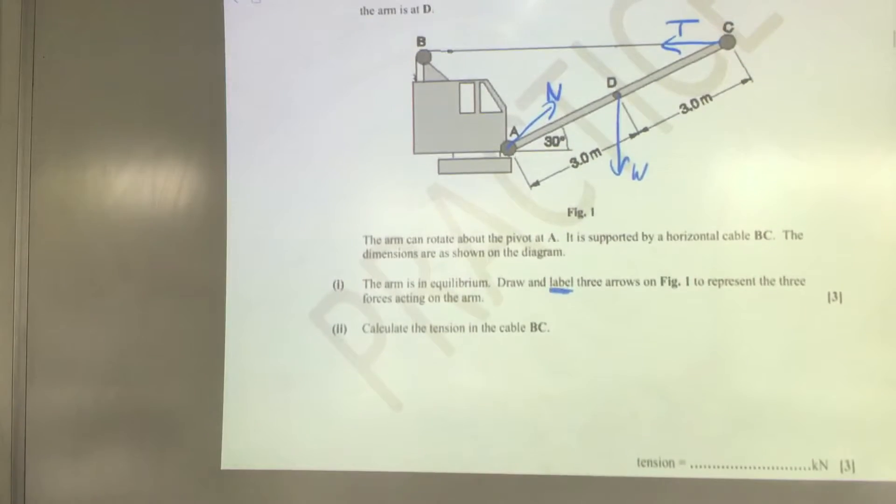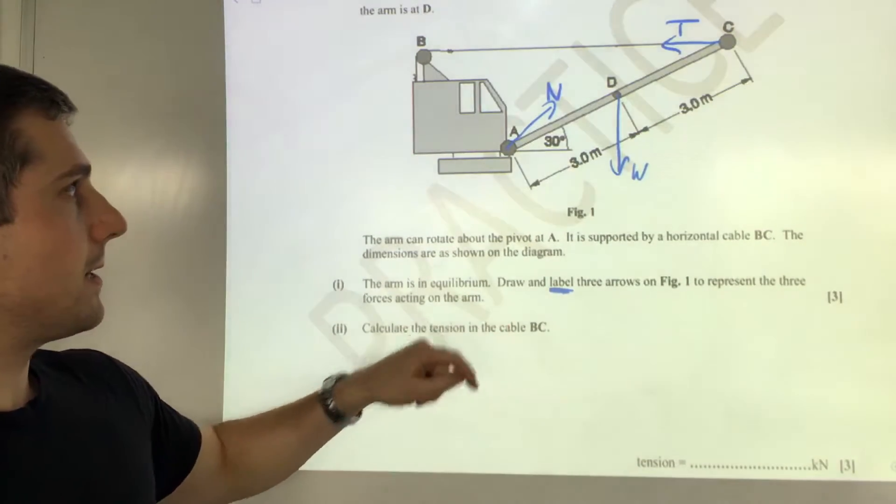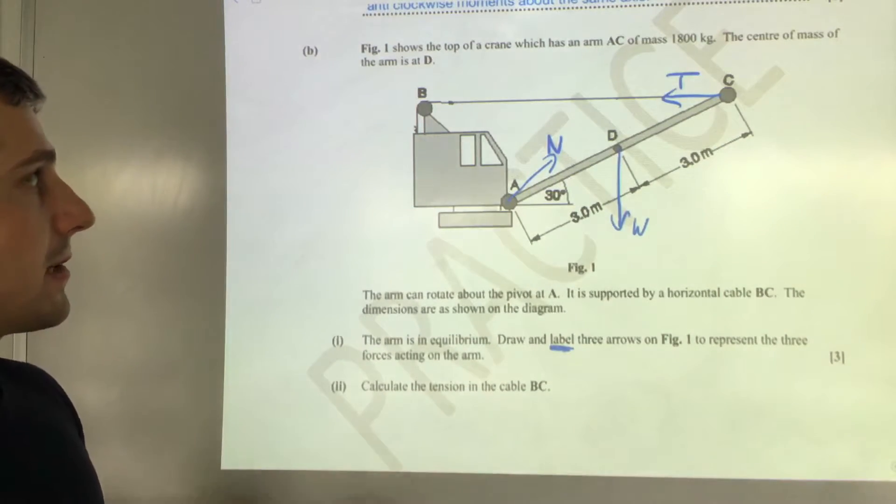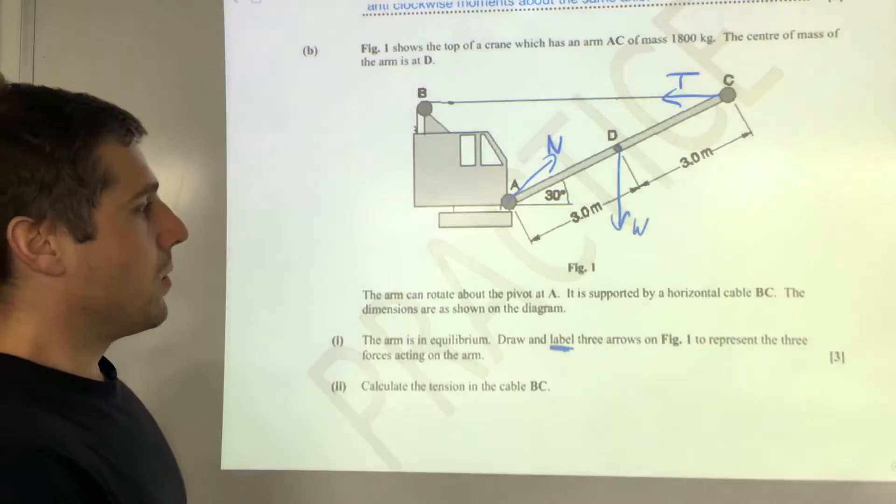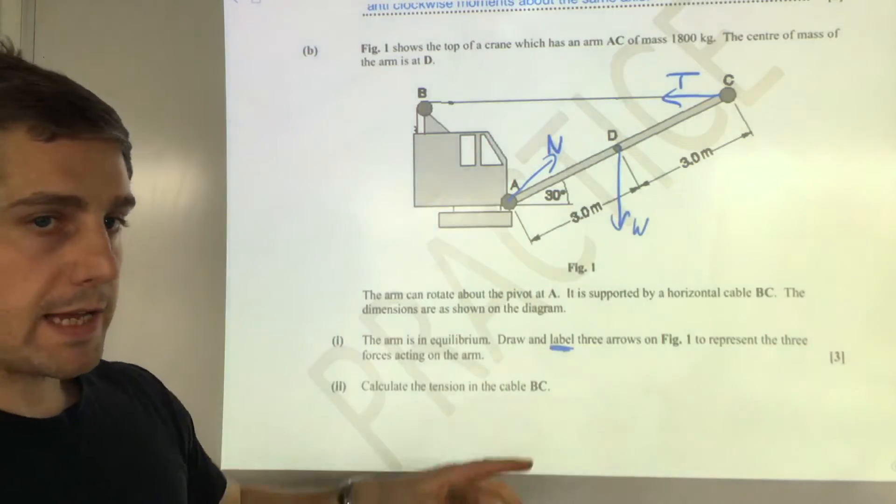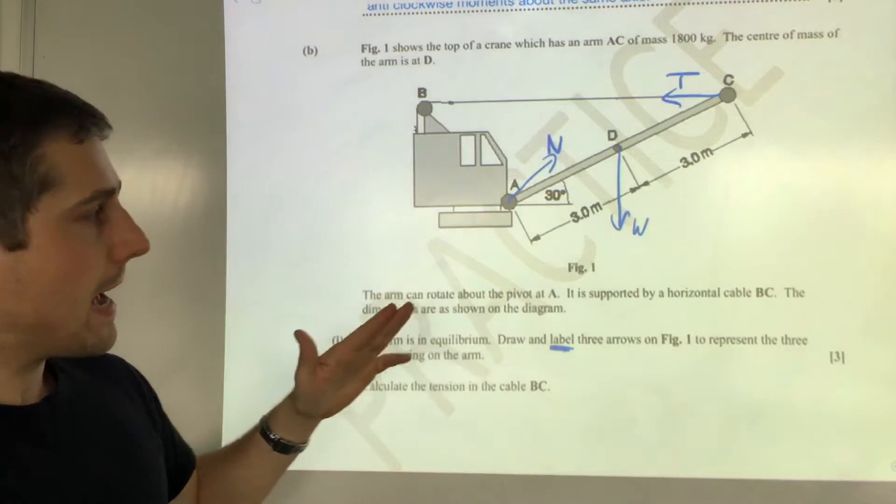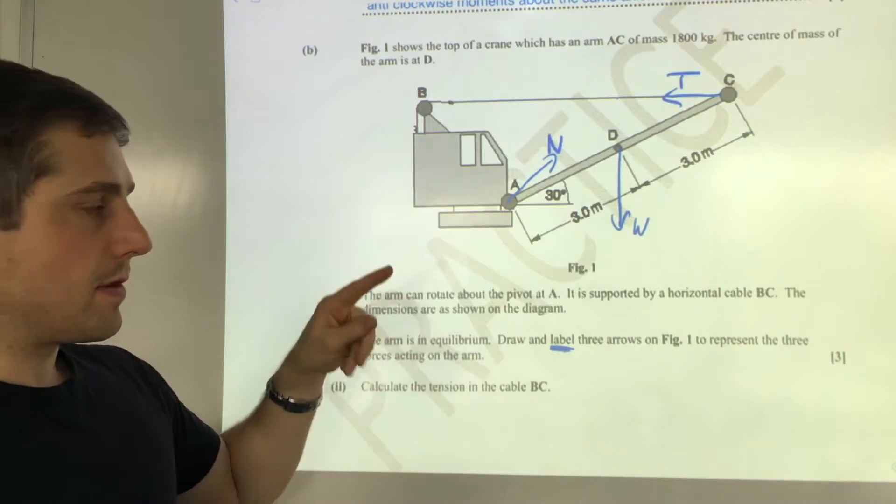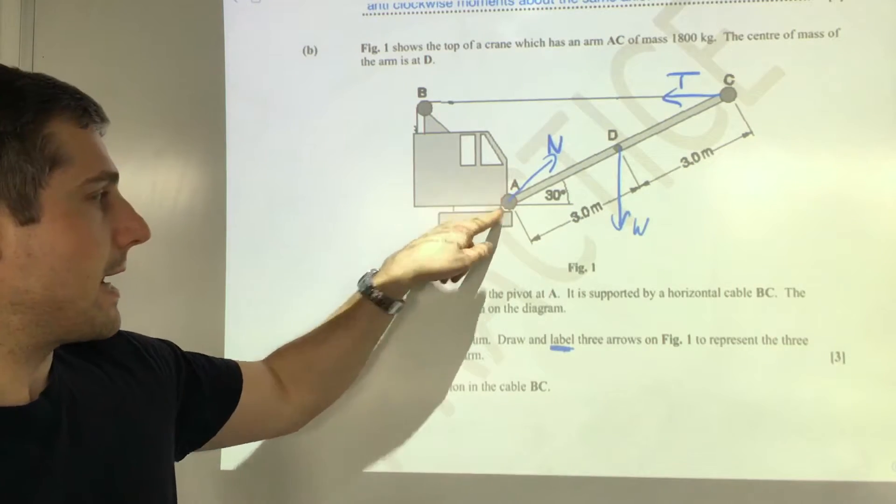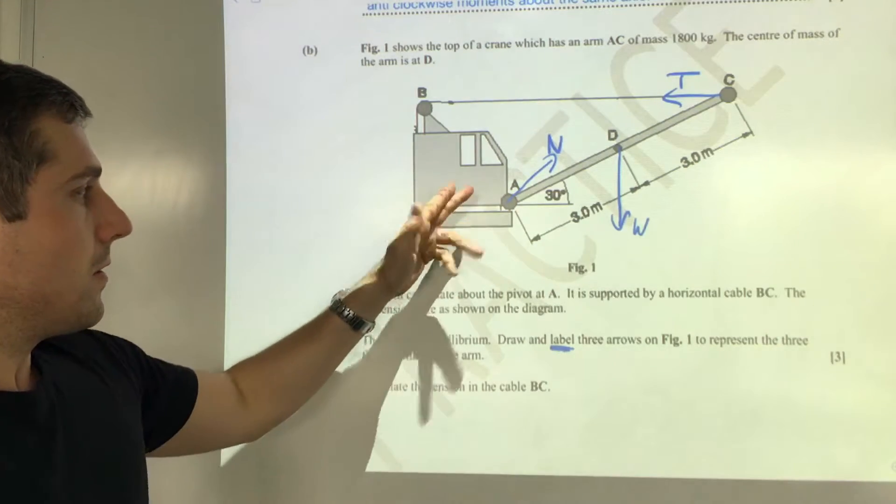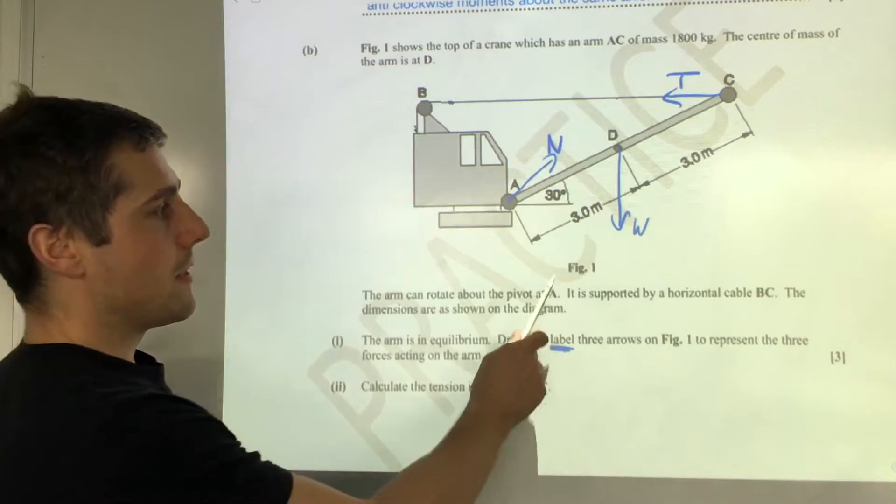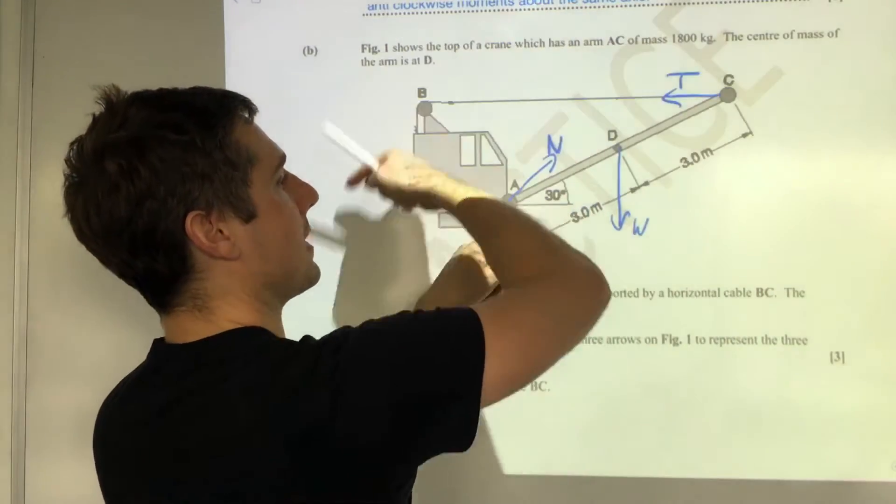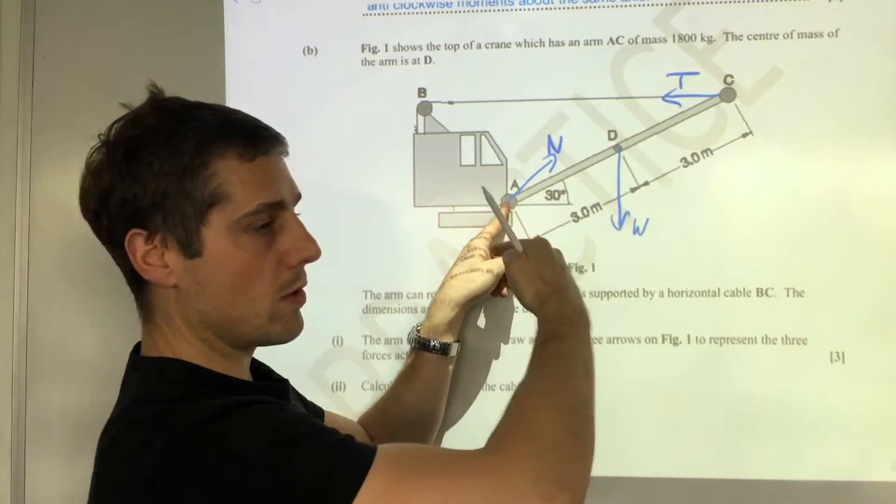Now using the data of the question we need to calculate the tension in the cable BC. We're going to do that by using moments, using the principle of moments which we stated above. We will take moments about A. The reason for that is that this unknown force N acts exactly through A, and that means it provides no moment around it because the perpendicular distance between the line of action of N and A is zero. That leaves us with W and T. T provides an anti-clockwise moment and W provides a clockwise moment.